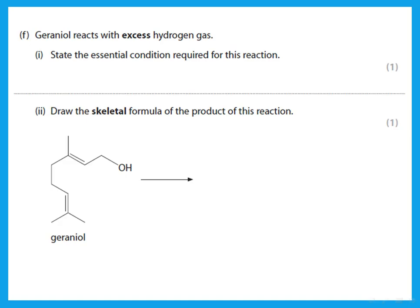Geraniol reacts with excess hydrogen. State the essential conditions. Remember that geraniol has a double bond, so we're reacting an alkene with hydrogen. The conditions: use nickel catalyst or platinum catalyst. Draw the skeletal formula of the product. That is an alkene reacting with hydrogen, which means the double bonds will open up and form single bonds. He wants the skeletal formula, so you just simply remove the double bonds—that's what you get when you react with hydrogen.